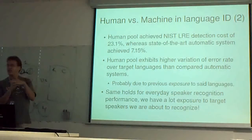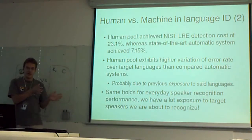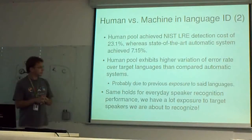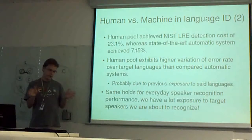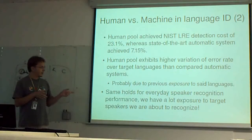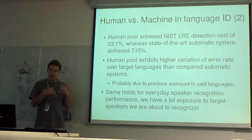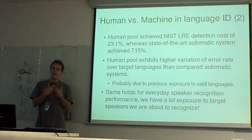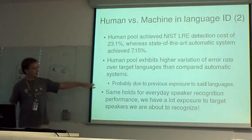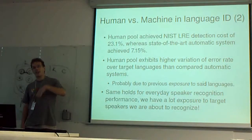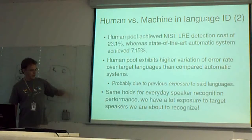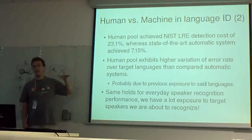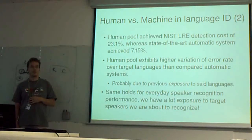Human performance varied — different humans were very good at detecting different languages. This probably has something to do with how much exposure you have to those languages. In speaker verification, you are very good at recognizing people you know. Similarly, in language ID, if you have exposure to a language, you are better at recognizing it. Humans were definitely better at recognizing English, but the BUT system was better at recognizing the other languages.